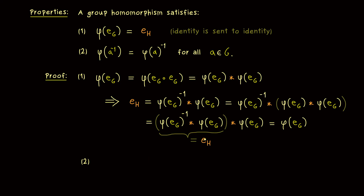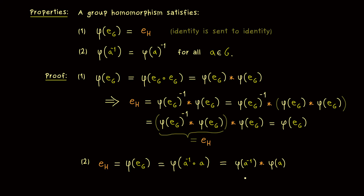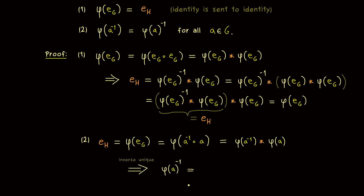And now this property we can use to prove the second part. The identity in H is given as phi of e_G, and e_G can always be written as A inverse times A — this is the binary operation in G. With the group homomorphism, we can translate that to the binary operation in H, and there we see we put two elements together and get the neutral element in H. You know, this equation defines inverses, and they are always uniquely given. Therefore, we can conclude that phi of A inverse is given as phi of A inverse. So what you can remember here is that a group homomorphism allows us to pull out the inverse sign, and similarly we can pull out the binary operation.